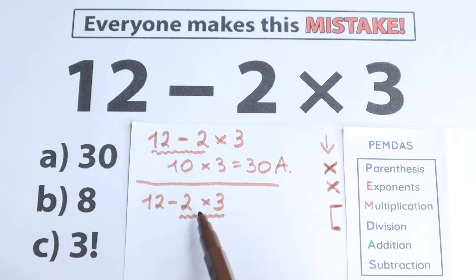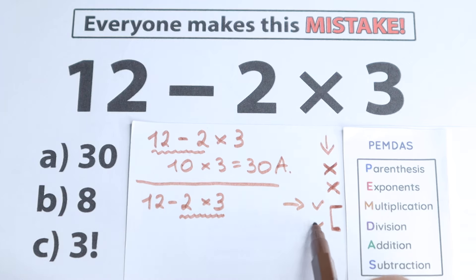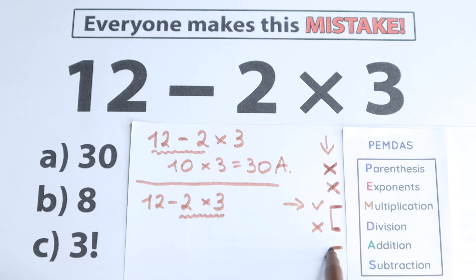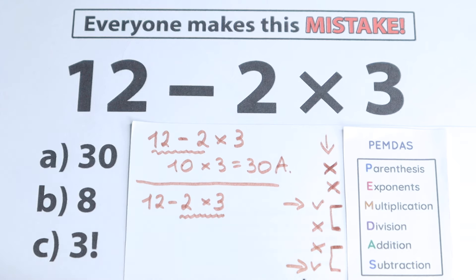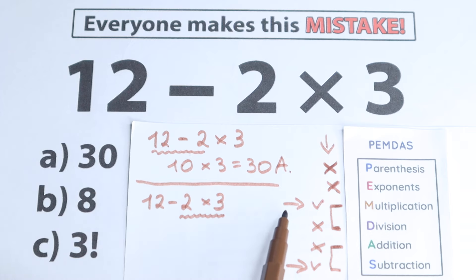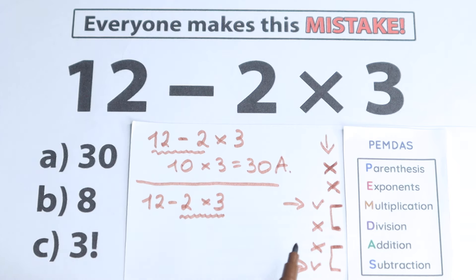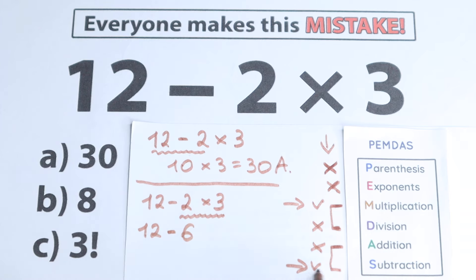So we need to start from this multiplication — this is a really important step. We have multiplication here, and we don't have division. We have subtraction, but subtraction comes after multiplication. So we have two operations: multiplication and subtraction. If you look closely, subtraction and addition is our last step. Before that we handle the multiplication and division group, then we add and subtract. So: 2 times 3 equals 6, and the last step is 12 minus 6, which equals 6.